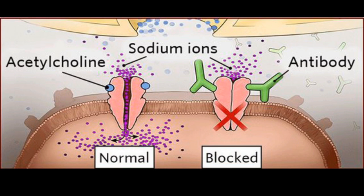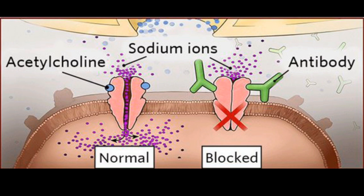As you can see in this diagram, this is the neuromuscular junction. These are the cholinergic or acetylcholine receptors. Normally, the acetylcholine released from the presynaptic area binds to the acetylcholine receptors on the postsynaptic area. Because of this binding, the channel opens and sodium ions enter inside the postsynaptic area. This process occurs in normal individuals.